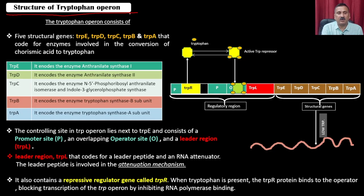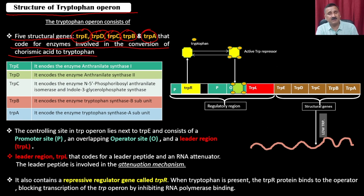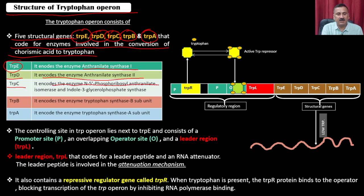Regarding the structure of the tryptophan operon, there are 5 structural genes: trpE, D, C, B, and A, which code for enzymes involved in the conversion of chorismic acid to tryptophan. trpE codes for anthranilate synthase 1; trpD codes for anthranilate synthase 2; trpC codes for 5-phosphoribosyl anthranilate isomerase and indole-3-glycerol phosphate synthase; trpB encodes tryptophan synthase B subunit; and trpA encodes tryptophan synthase A subunit.